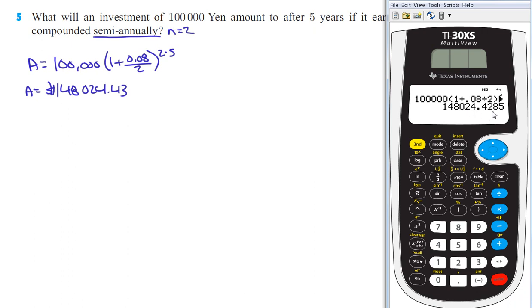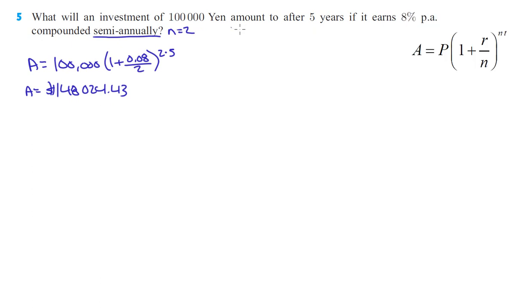148,024.43. And it says what will an investment of this amount to — so we're not looking for just the interest, we're finding the total amount. So you ended up at 148,024.43 yen.